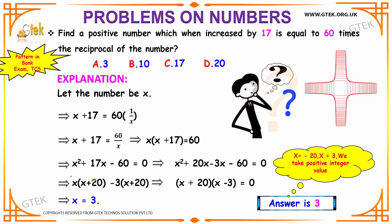You can see that x + 20 is common in both terms. So take it outside. You will get (x + 20)(x - 3).